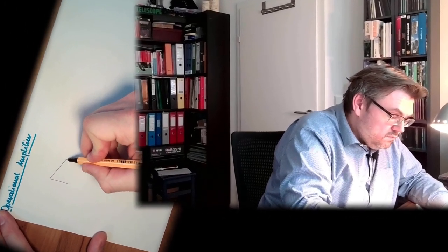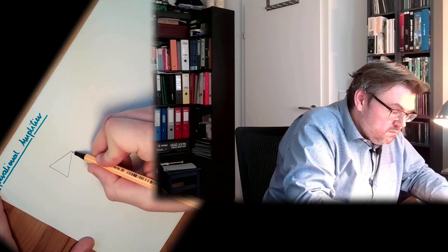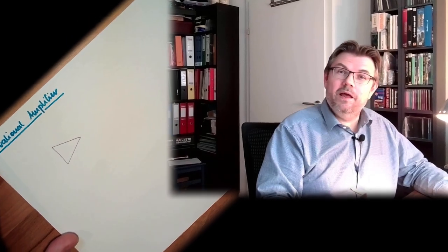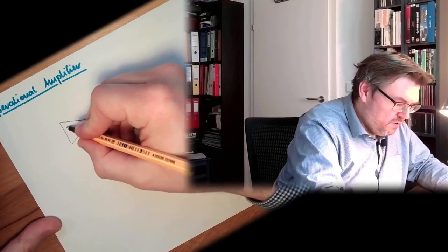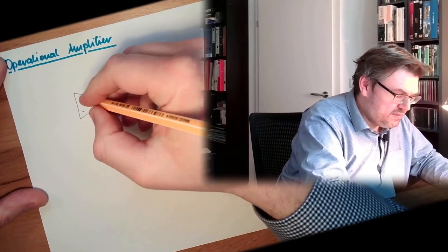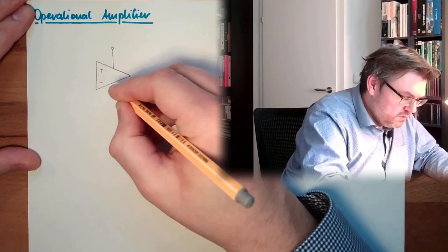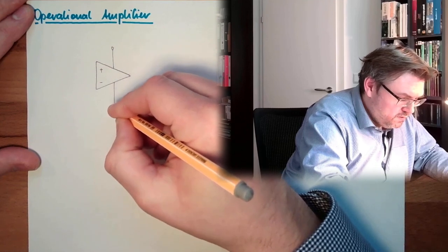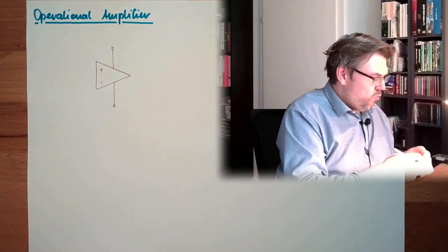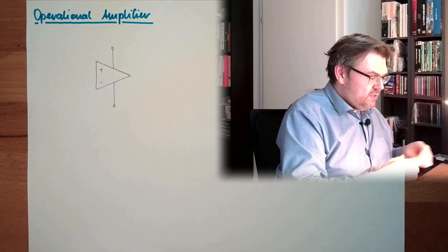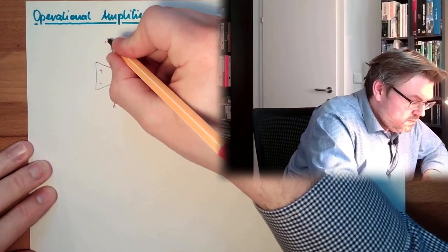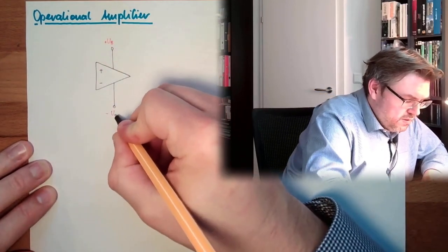The typical symbol of an operational amplifier looks like that. It's an operational amplifier, a symbol of it. We have a plus input, we have a minus input, we have power connections. They are usually drawn here, so we have here somewhere plus UB and minus UB.